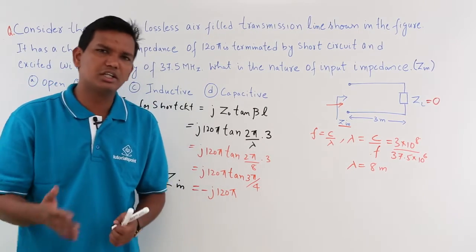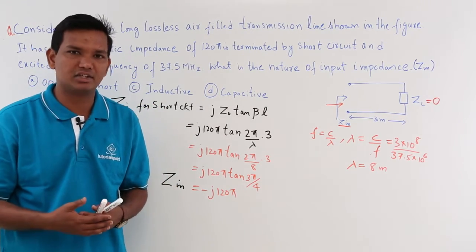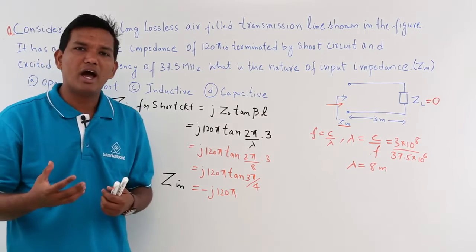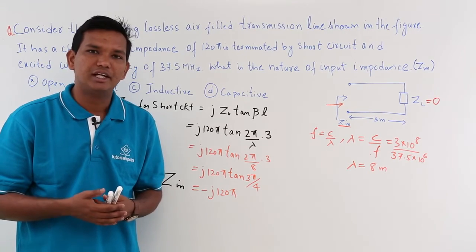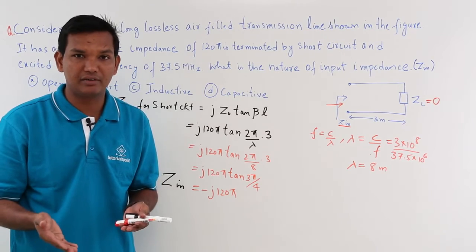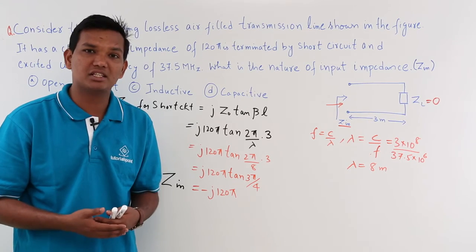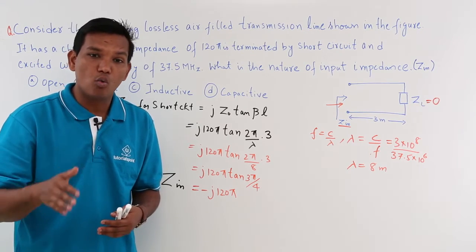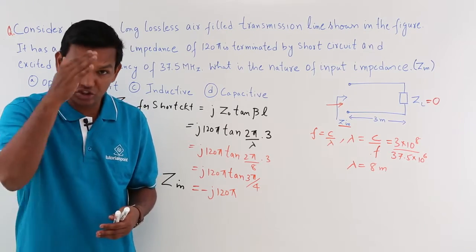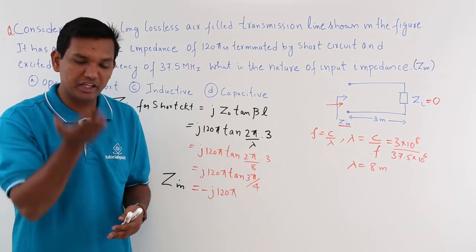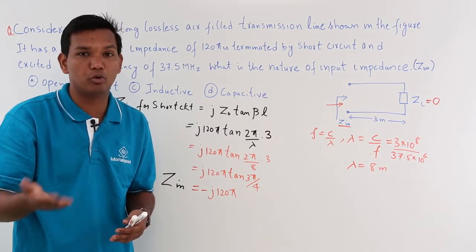So I found that the input impedance is -j120π. Now just recall your network analysis. When you have an inductor, what is the impedance that it would offer? It would be nothing but jωL. But when you have a capacitor the impedance will be 1/(jωC), so the j will be in the denominator part. When you take it up it will become -j/(ωC).